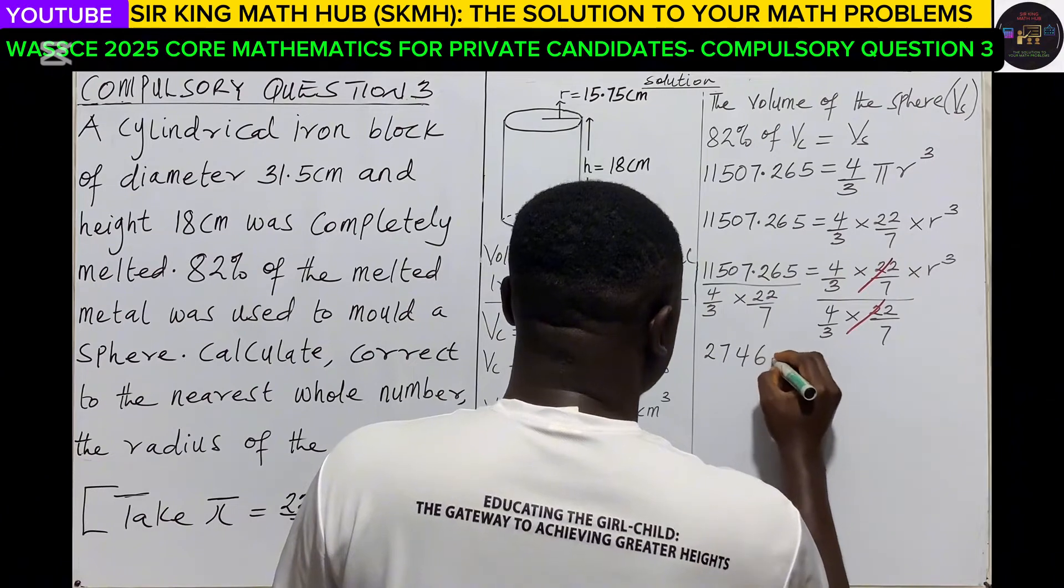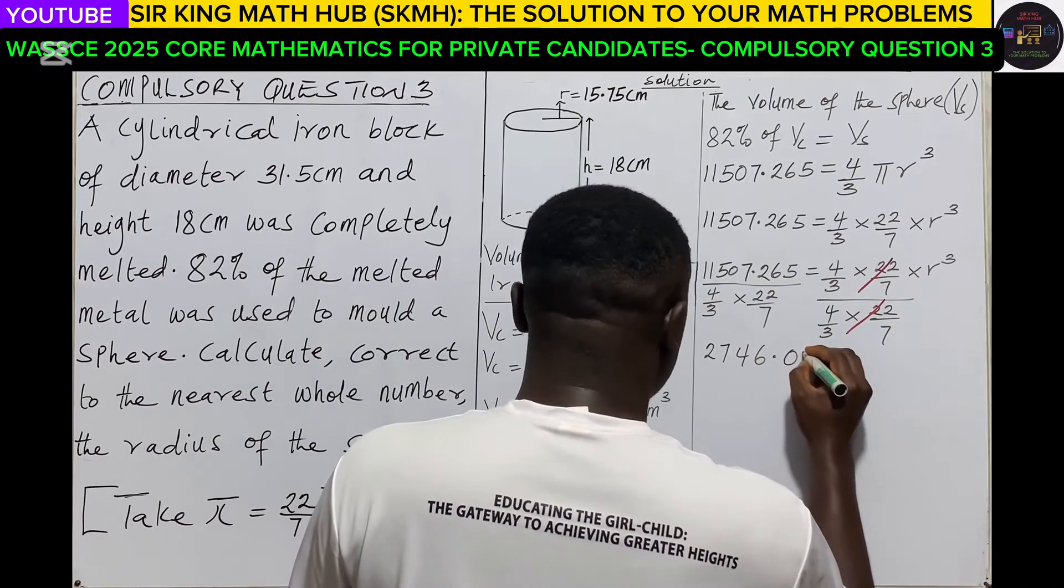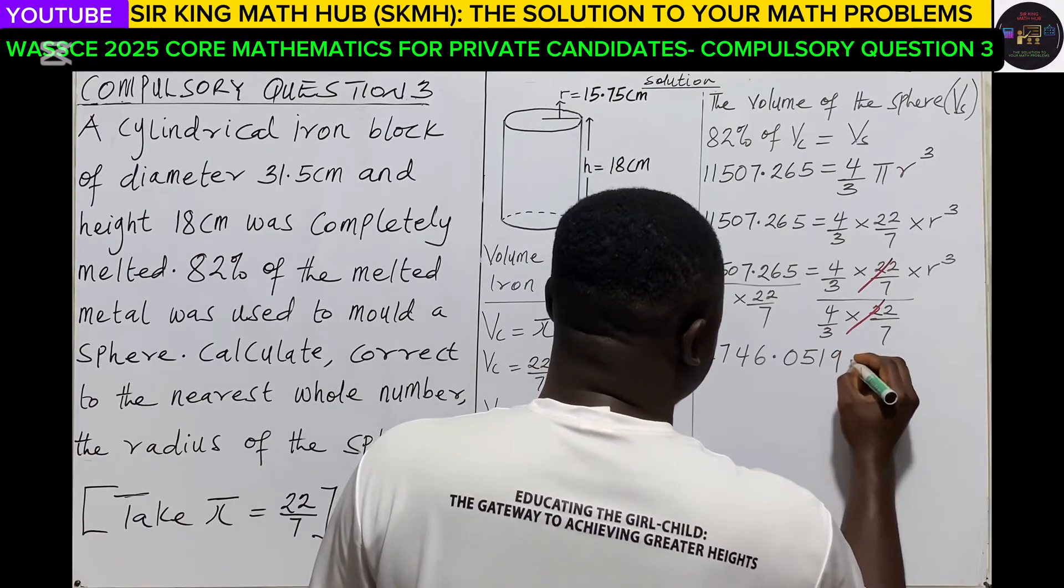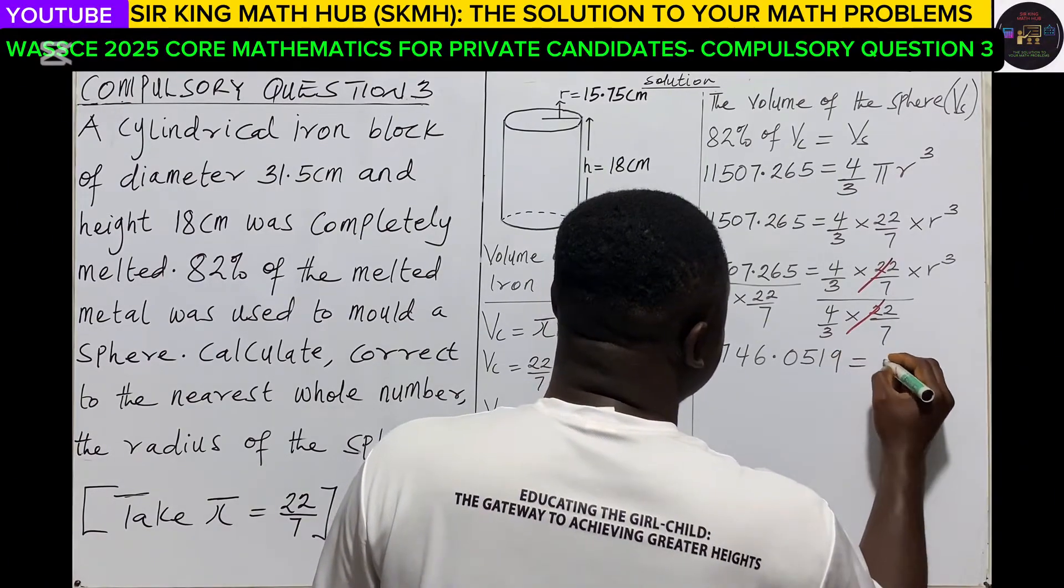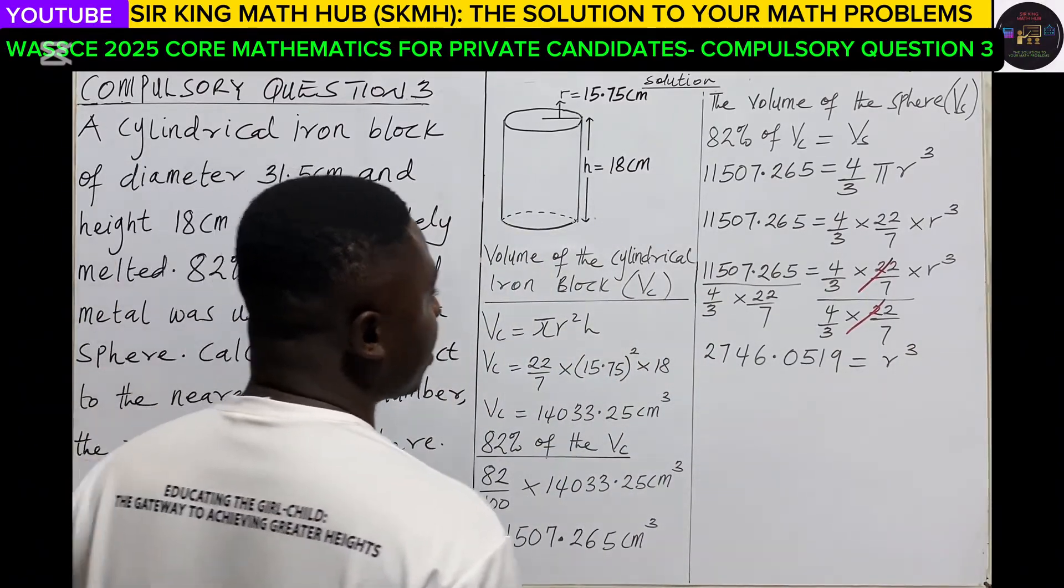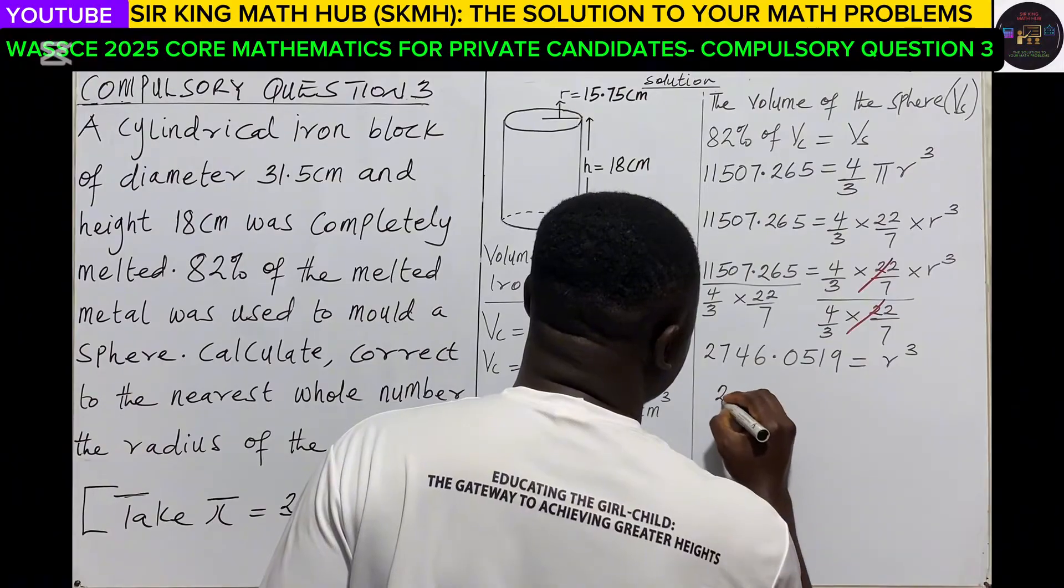So I'm having 2746.0519 to 4 decimal places. We call that r³. But we are looking for r. So what do we do?